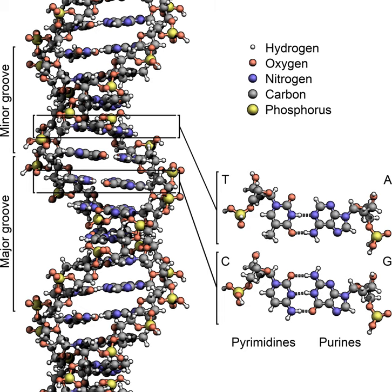The asymmetric ends of a strand of DNA bases are referred to as the 5' and 3' ends. One of the major differences between DNA and RNA is the sugar, with 2-deoxyribose being replaced by the alternative pentose sugar ribose in RNA.